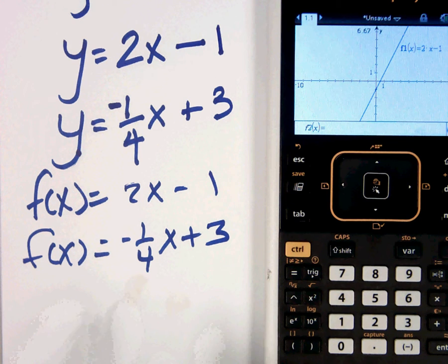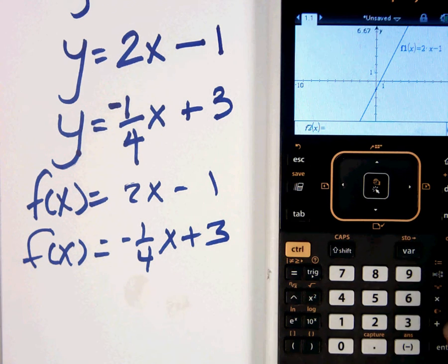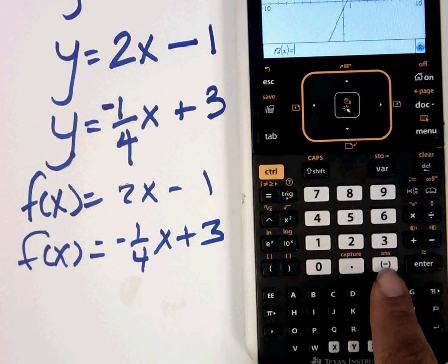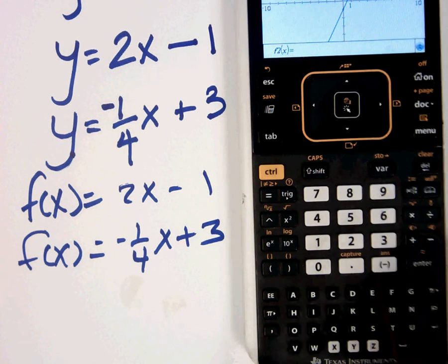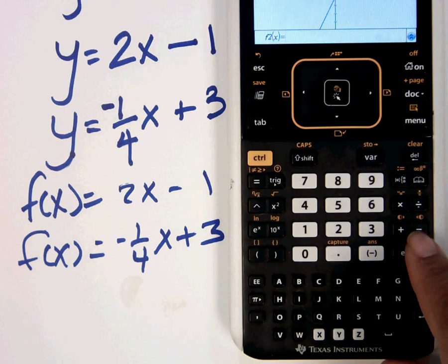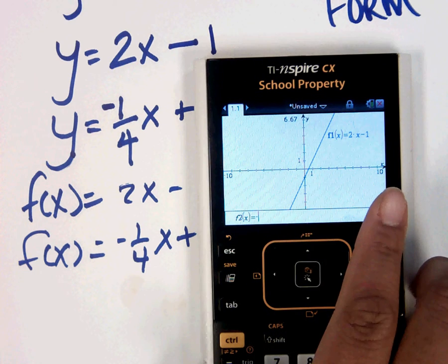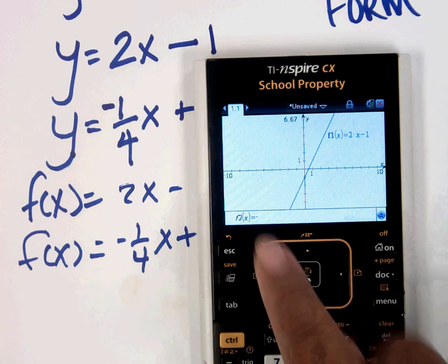Okay, so now let's type in negative 1 over 4x plus 3. So use this negative here. This is your negative. This over here is minus. So be very careful. Make sure you can still see the screen and the negative is there.